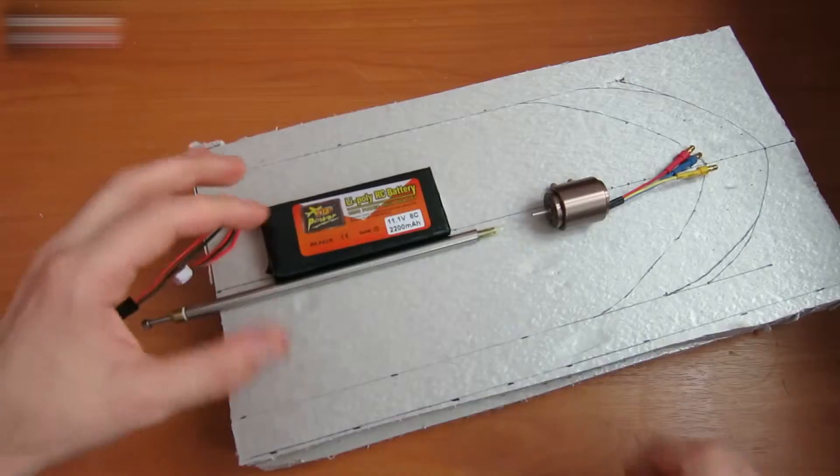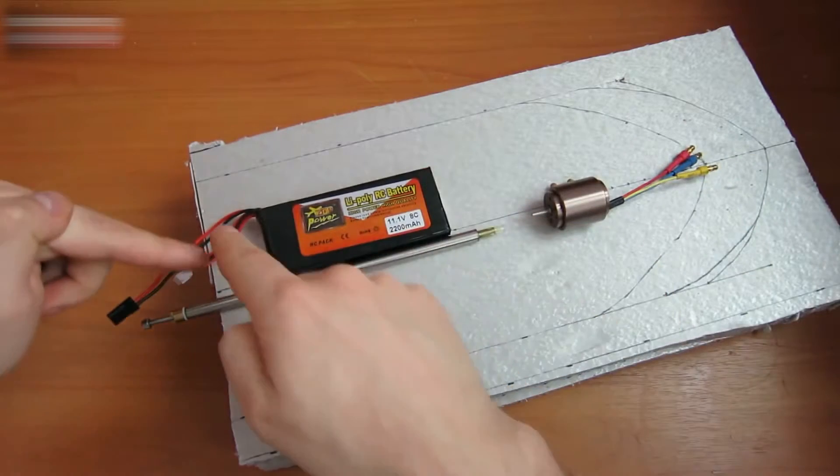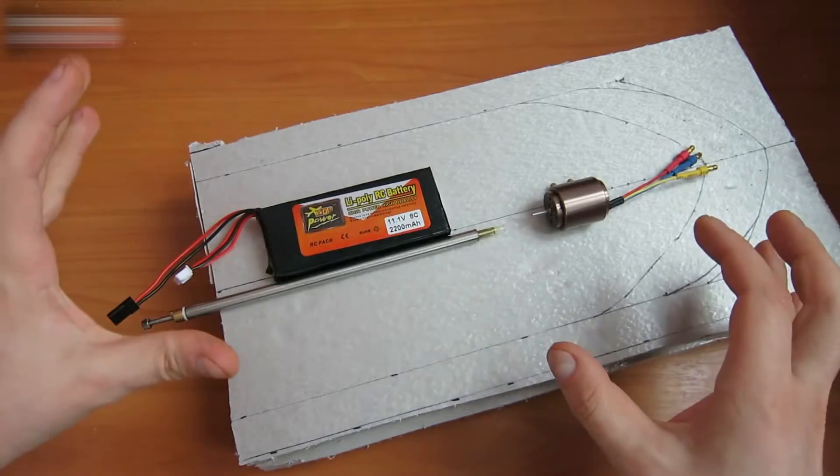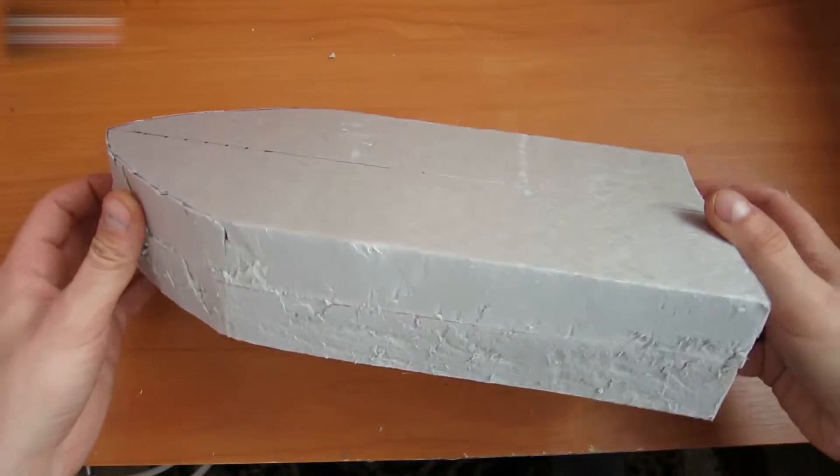Measure all the large parts of equipment and draw an approximate boat outline. I have a 5.5-inch to 11-inch shape. Cut it out. It should look like this.